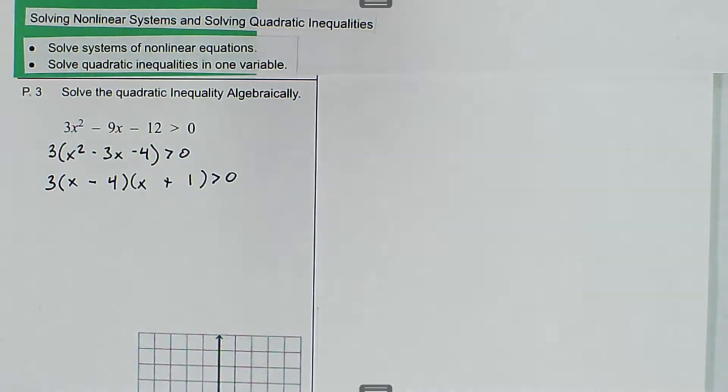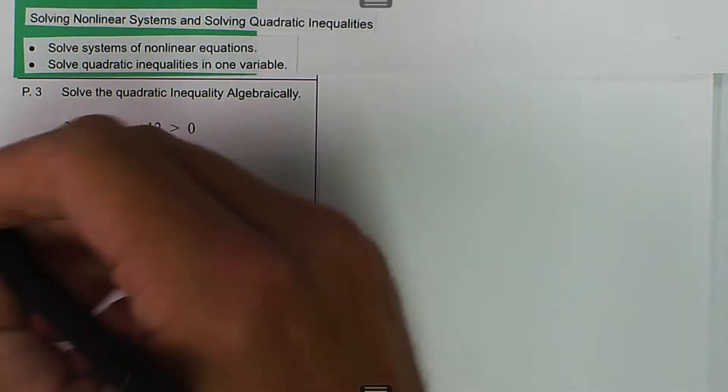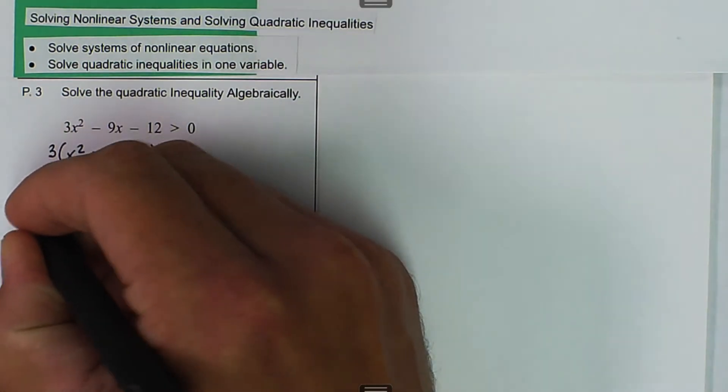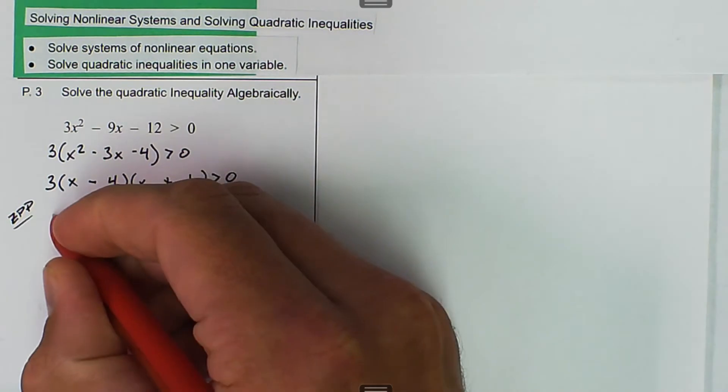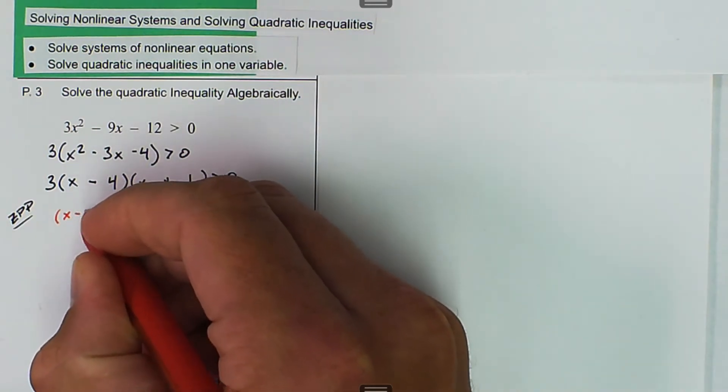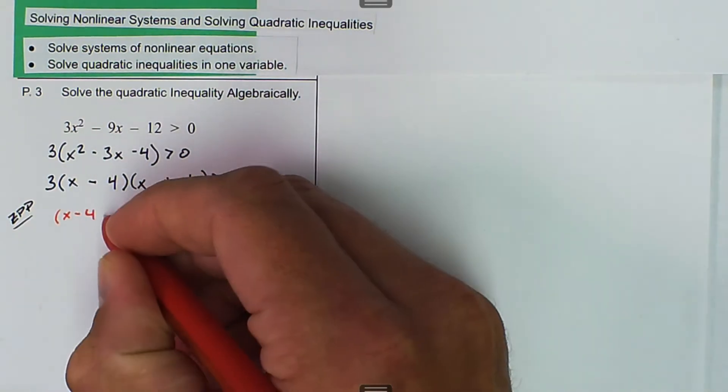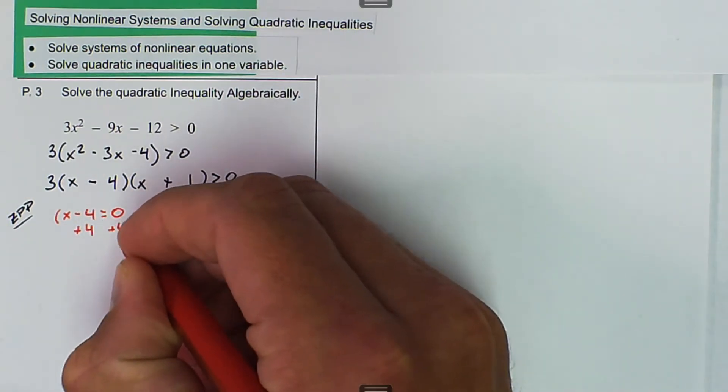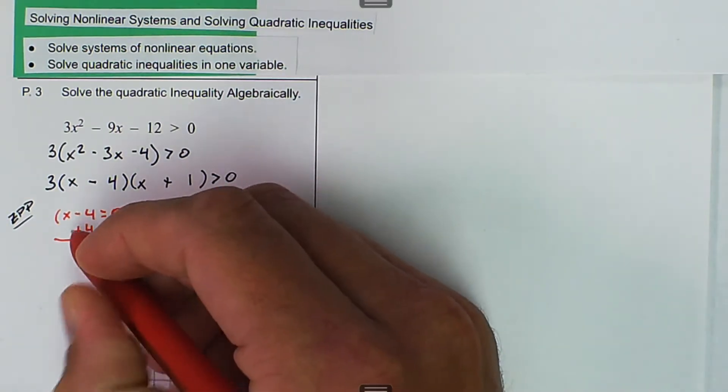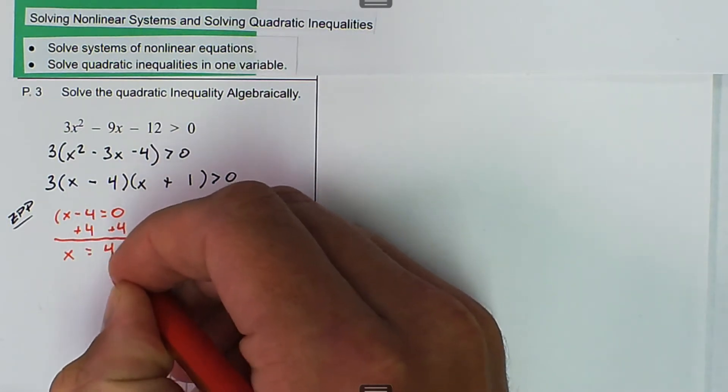And then in this case, we can use our zero product property. So zero product property, and we're going to set each product equal to 0. So one of the products is x minus 4. We set that equal to 0, so we're going to add 4 to both sides. And we get x is equal to 4.